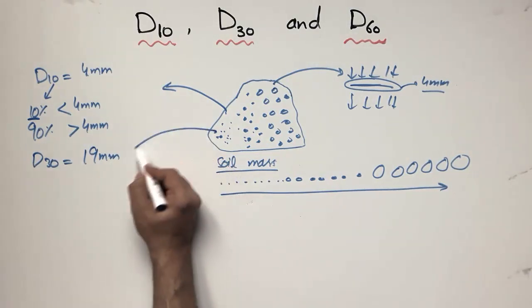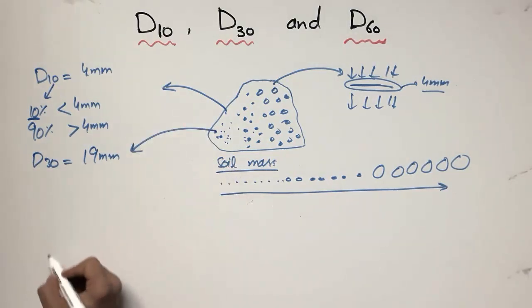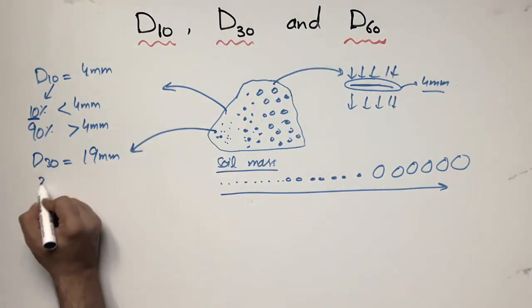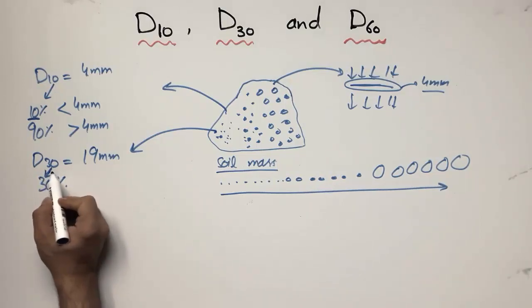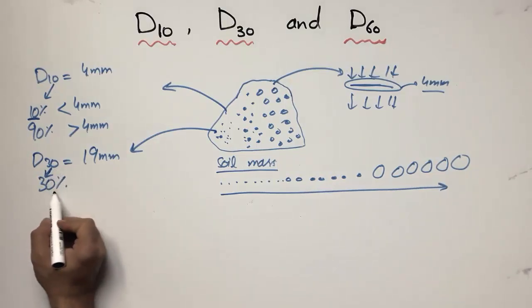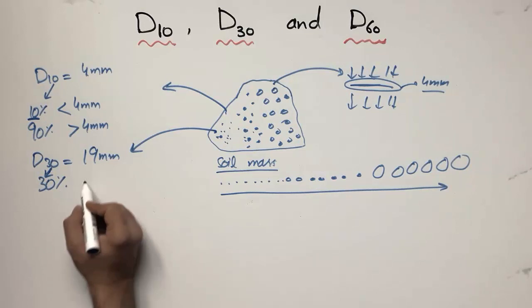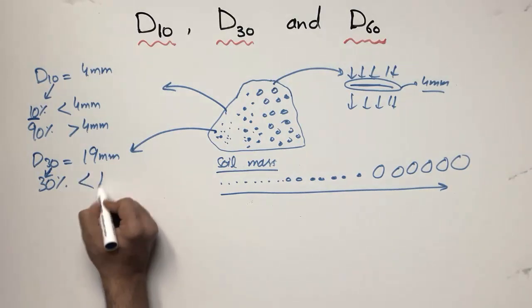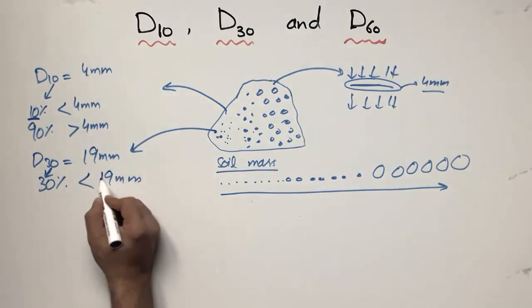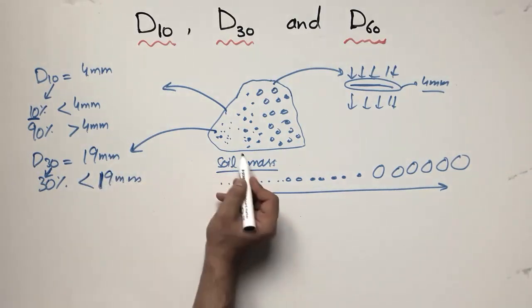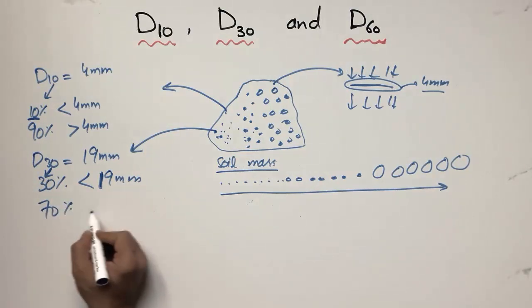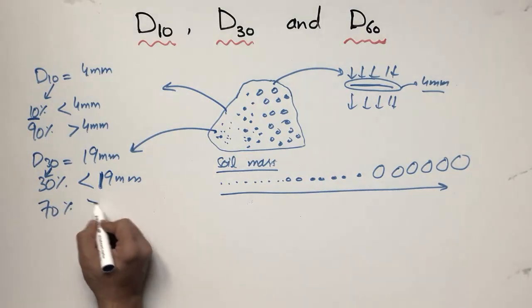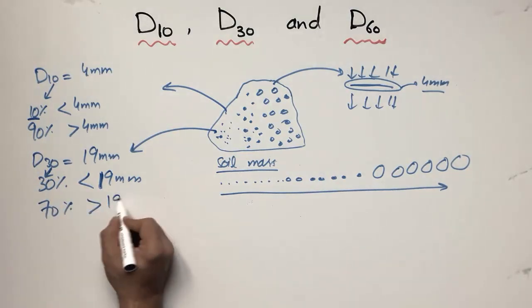Similarly, D30 equals 19 millimeters for this soil sample. This means that 30 percent of the particles are smaller than 19 millimeters in size, while the remaining 70 percent of particle sizes are greater than 19 millimeters.